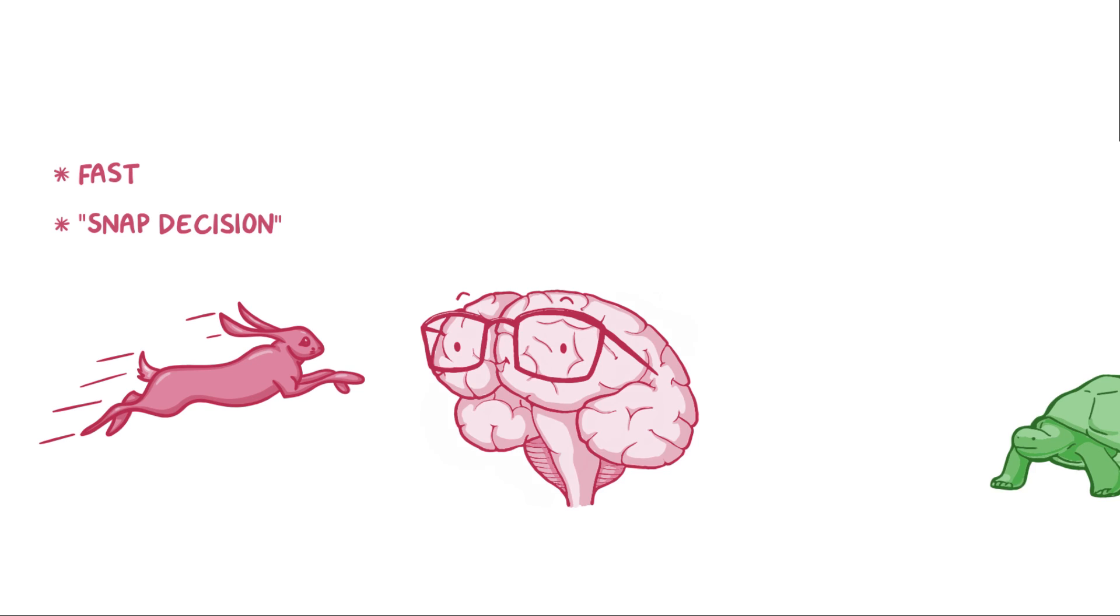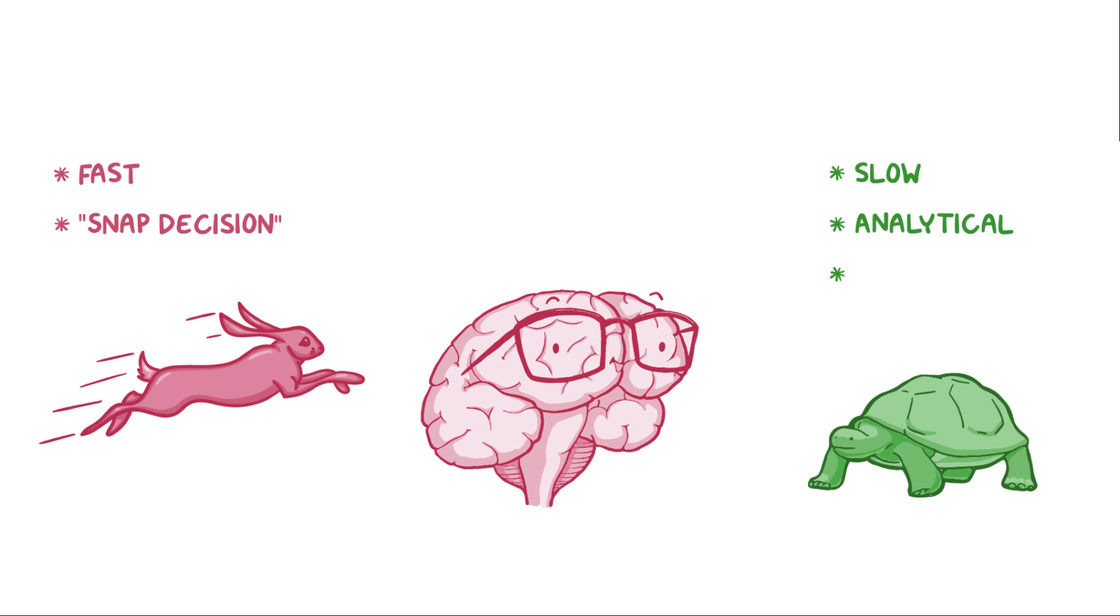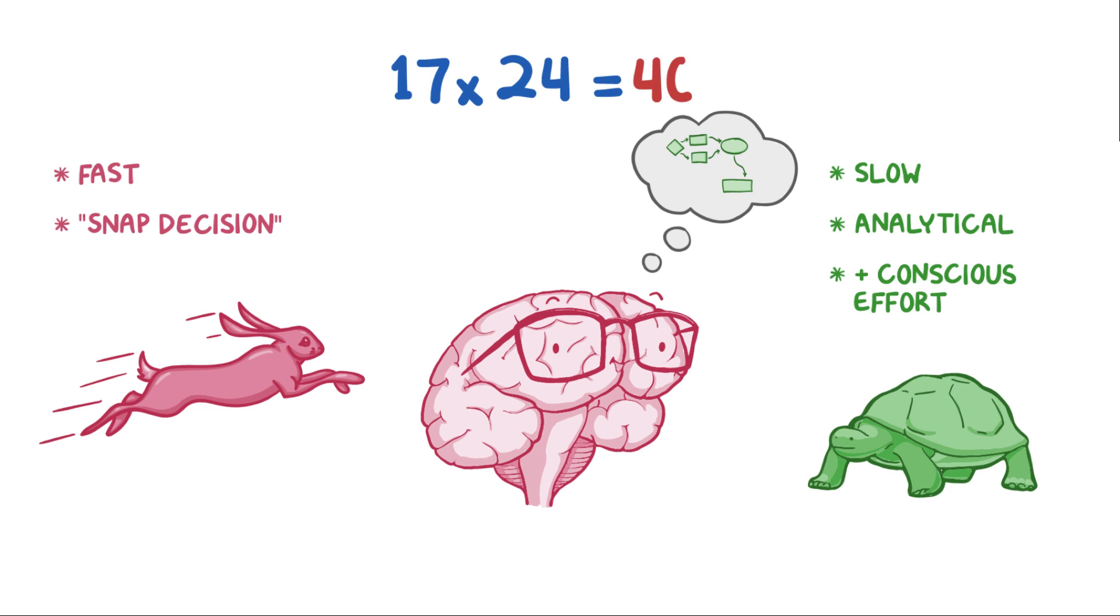System 2 thinking, on the other hand, is slow. It's analytical and takes more conscious effort. If asked what 17 times 24 was, most people need a bit of time to get to the answer, which is 408.